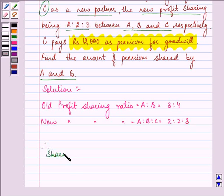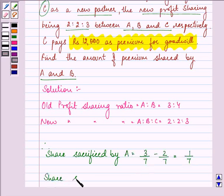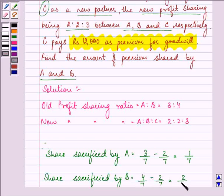So let us find out the share sacrificed by A. That is old share minus new share. That is 1 by 7. Similarly, we need to find out share sacrificed by B. That is 4 by 7 minus 2 by 7. That is 2 by 7.